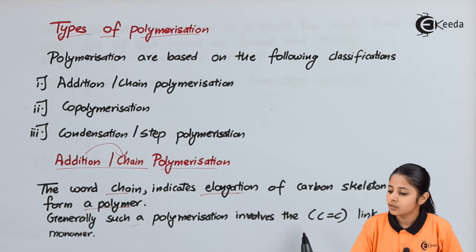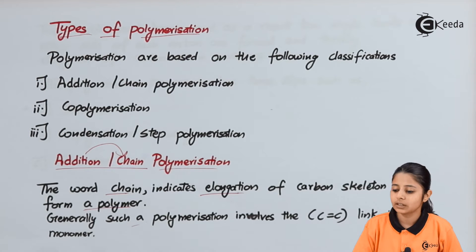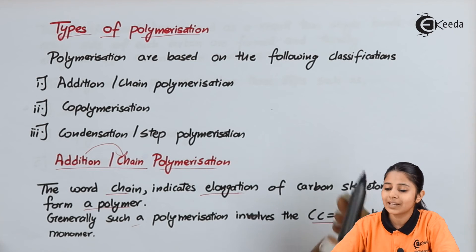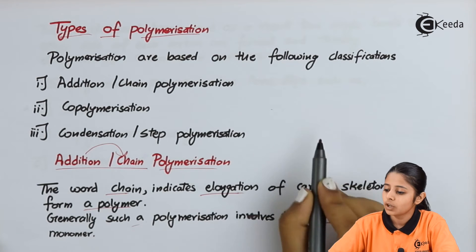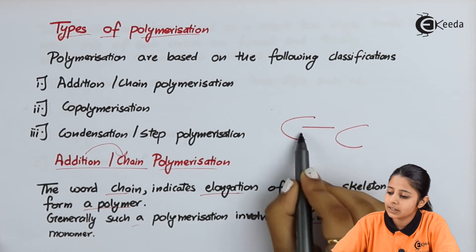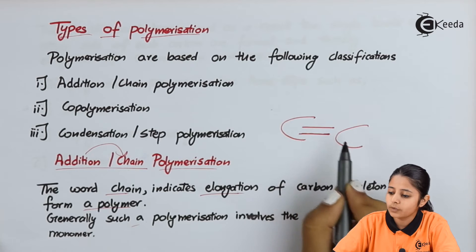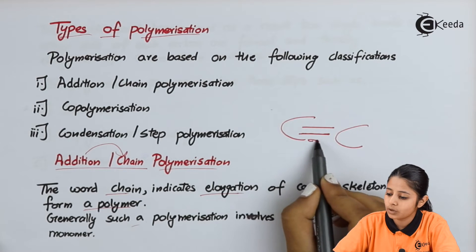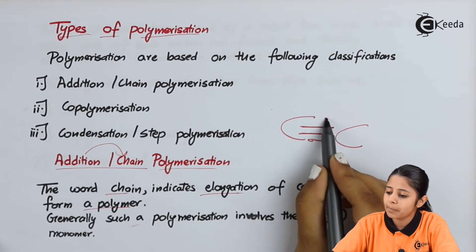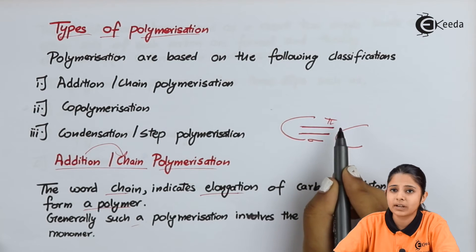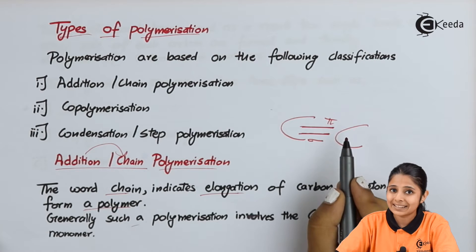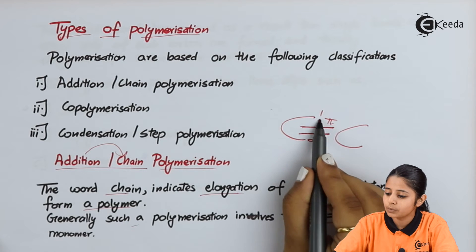Generally, such polymerization involves a C double bond C link in the monomer. We need this C=C link so that we can break the pi bond out of it. When we have two carbons attached by two bonds: the bond below is known as the sigma bond and it is a strong bond, while the bond above is known as the pi bond and it is a weak bond — in fact, it is just a cloud of electrons — and that is why it is very easy to break this bond.